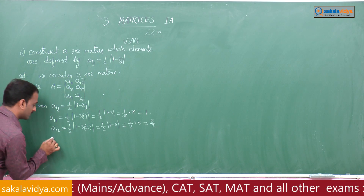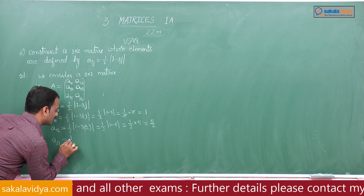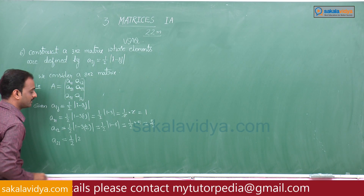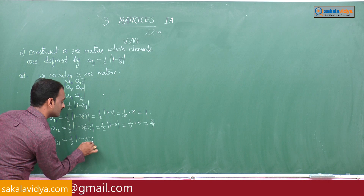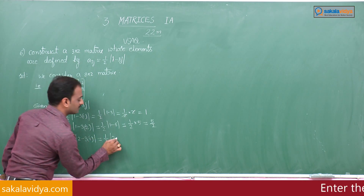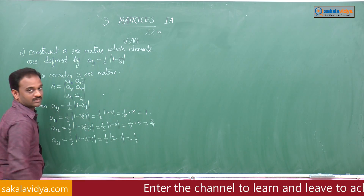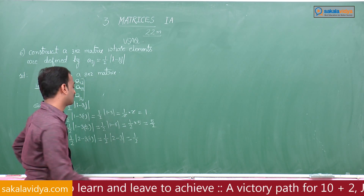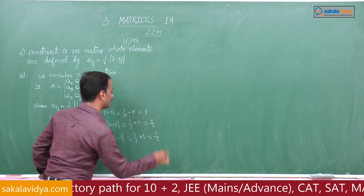Next element a21: second row, first column, so i equals 2 and j equals 1. We get 1 by 2 into mod of 2 minus 3 into 1, that is 1 by 2 into mod of 2 minus 3, which is modulus of minus 1 equals 1. So a21 equals 1 by 2 into 1, that is 1 by 2.